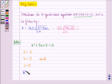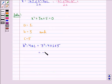We get b² - 4ac = 3² - 4×1×5, that is equal to -11. So x becomes -3 ± √(-11) divided by 2×1.